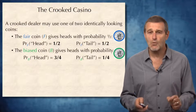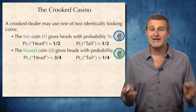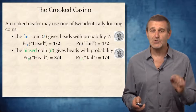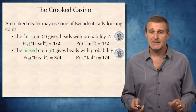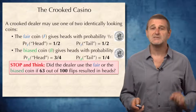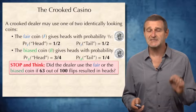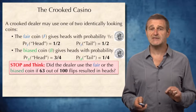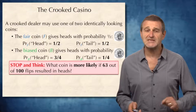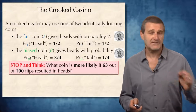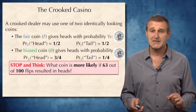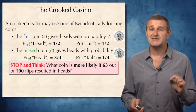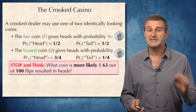The coins are completely identical, so you have no clue which coin the dealer uses. Suppose the dealer made 100 flips and 63 of them turned up heads — which coin did the dealer use, fair or biased? This question doesn't quite make sense, because any coin — fair or biased — can result in 63 heads. The right question is: what coin is more likely if 63 out of 100 flips resulted in heads?